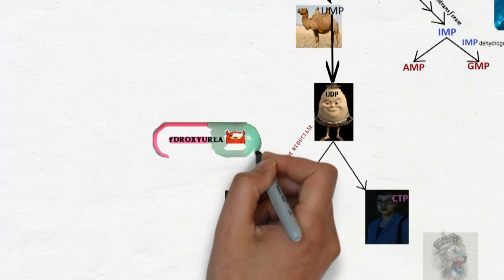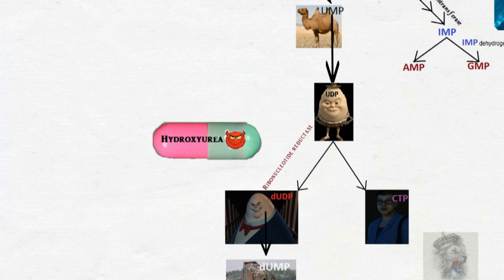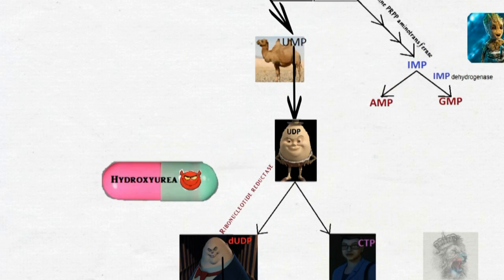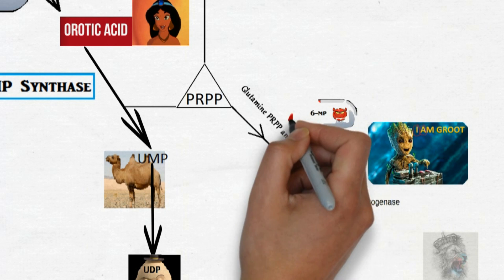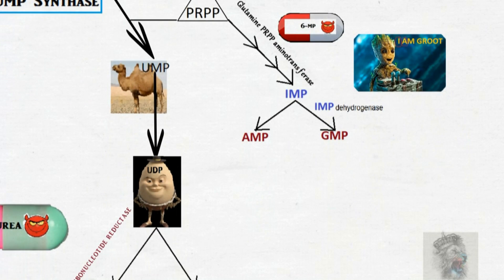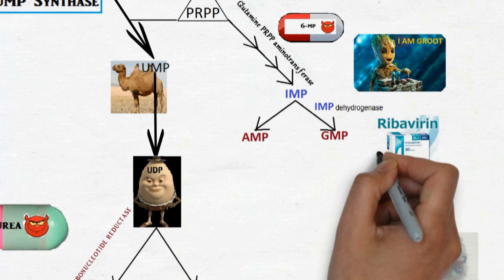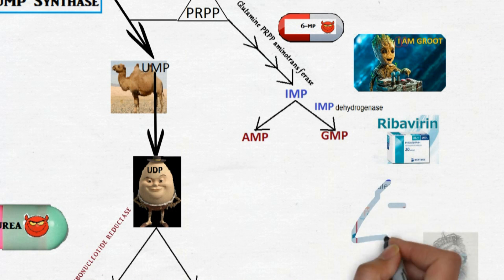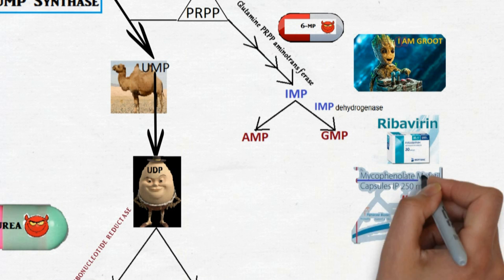When we come to purine synthesis inhibitors, they inhibit cell proliferation, especially leukocytes, so they are used as immunosuppressants in organ transplantation and autoimmune diseases. Now, for example, 6-mercaptopurine inhibits glutamine PRPP amidotransferase. Ribavirin and mycophenolate inhibit IMP dehydrogenase.